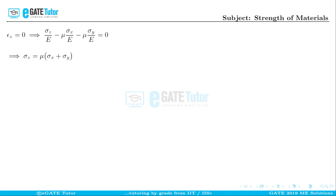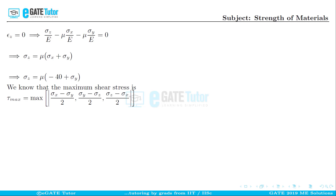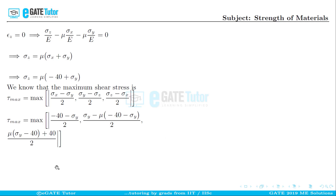With sigma_x = -40, substituting gives sigma_z = mu * (-40 + sigma_y). The maximum shear stress is: tau_max = maximum of |sigma_x - sigma_y|/2, |sigma_y - sigma_z|/2, and |sigma_z - sigma_x|/2. We substitute sigma_x = -40 and sigma_z = mu*(-40 + sigma_y) into this expression.